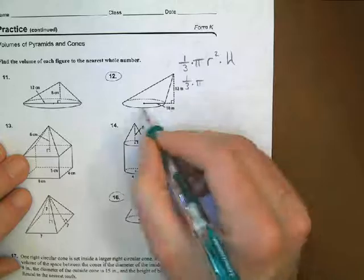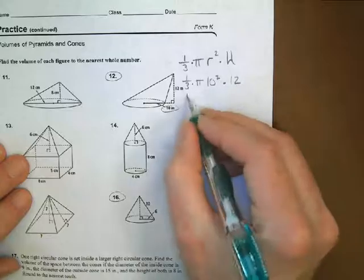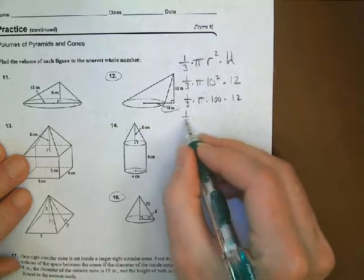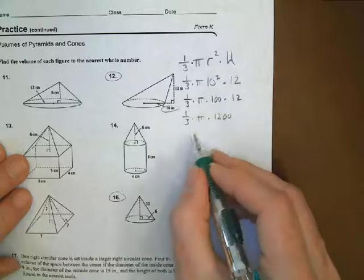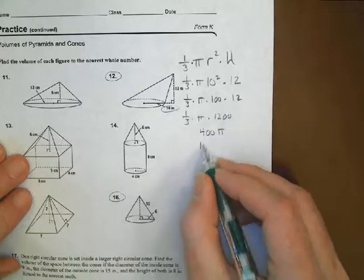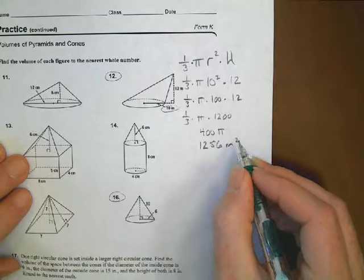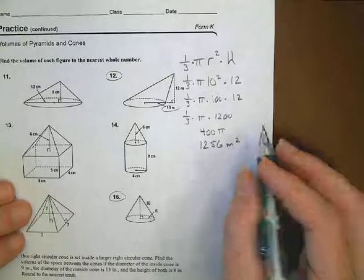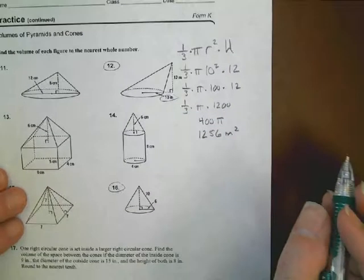So let's plug stuff in. We have 1/3 times pi. My radius is here at 10 squared times my height, which is 12. So 1/3 times pi times 100 times 12. Or 1/3 times pi times 1,200. I keep going. 1,200 divided by 3 is 400. So now I'm at 400 times pi. And 400 times pi is about 1,256 meters squared. Again, the answer key goes up to, I think, 57, one more than that. But again, I just went with 3.14 as my value. If you type in 3.14 for pi, that's what you come out with.